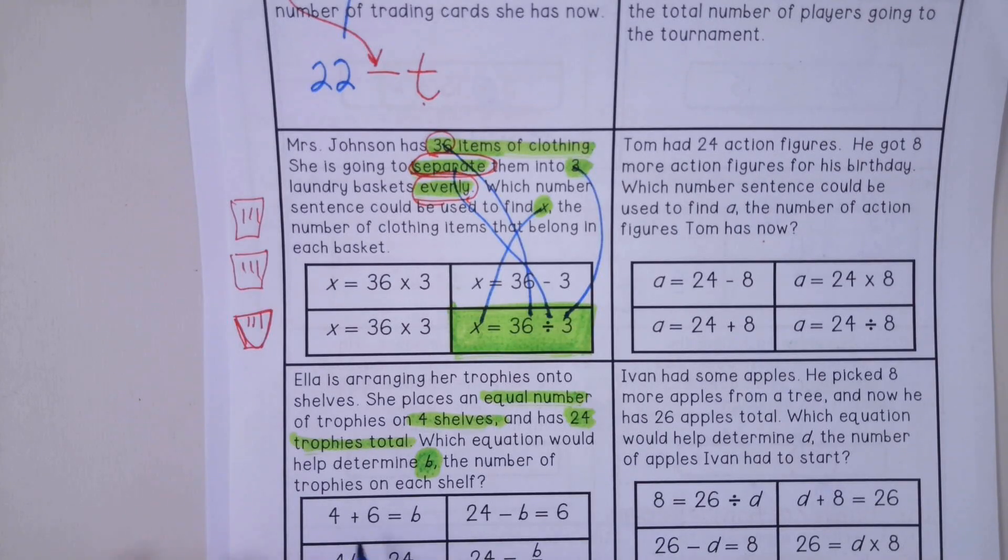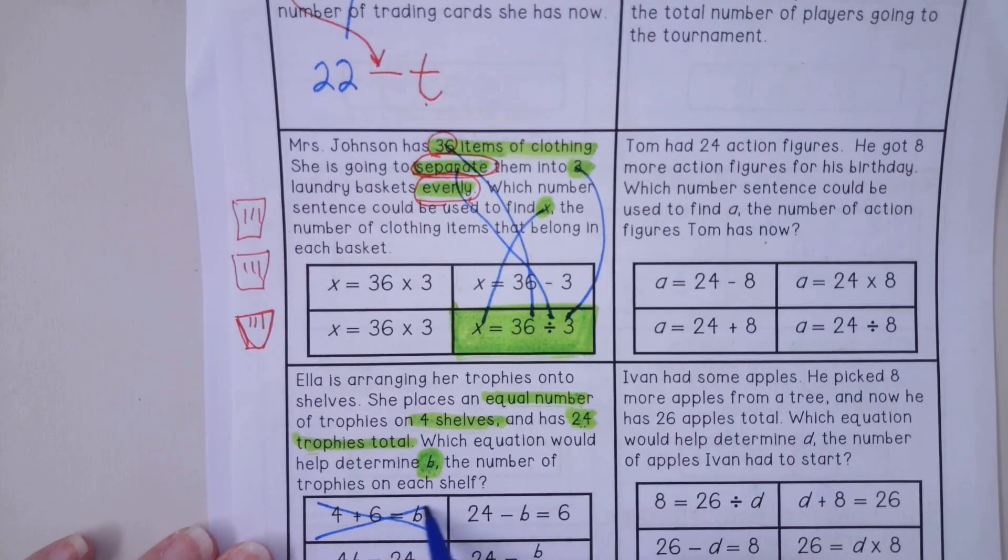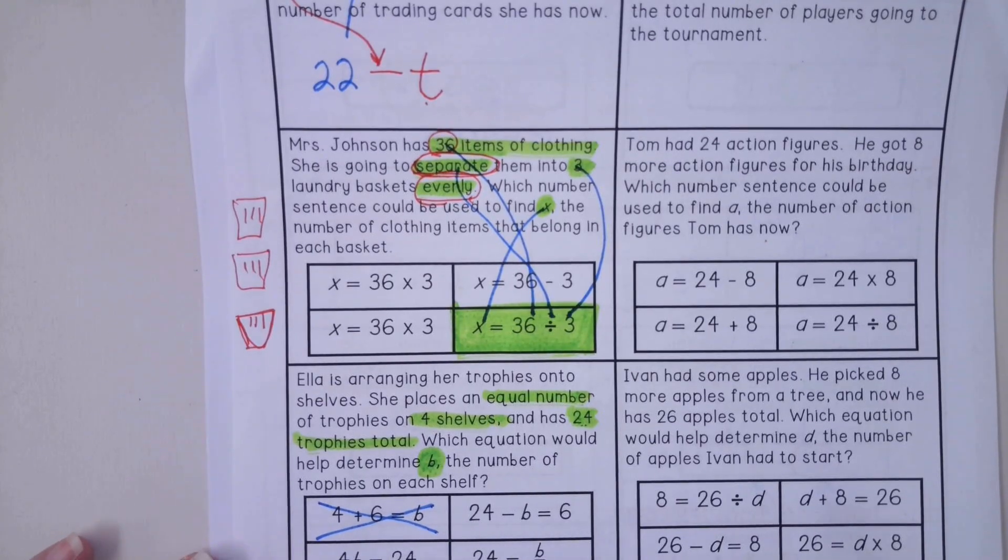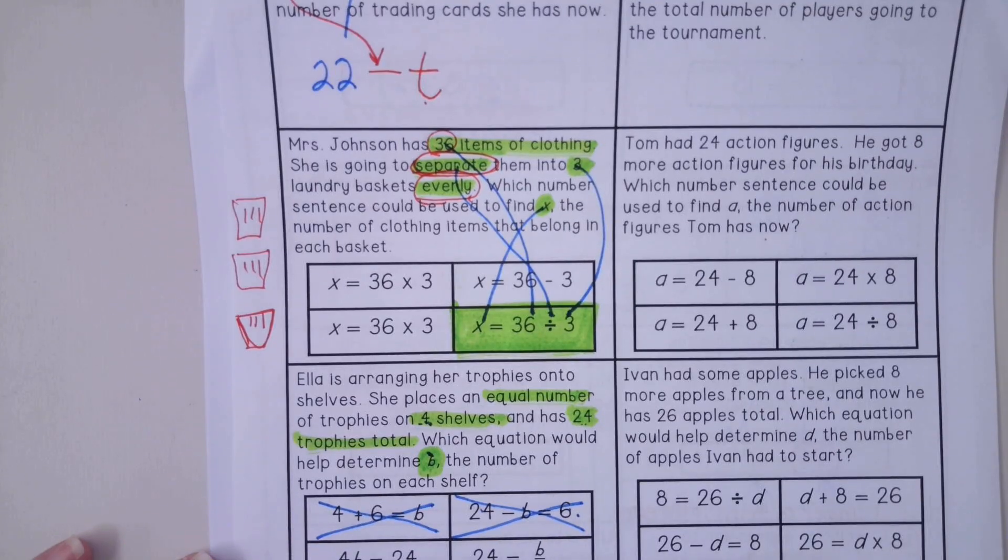In equation one, I do not see reference to the number 24. So I would not pick that one. Let's look at this one. I see the 24. I see the b, but I don't see the four. Four shelves, equally on four shelves, is not there. So I'm going to cross that one out.